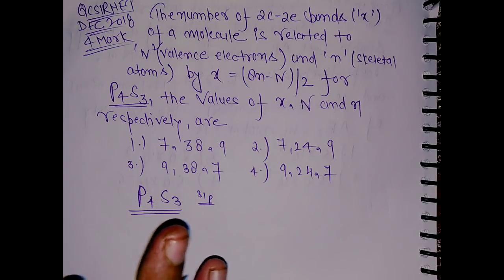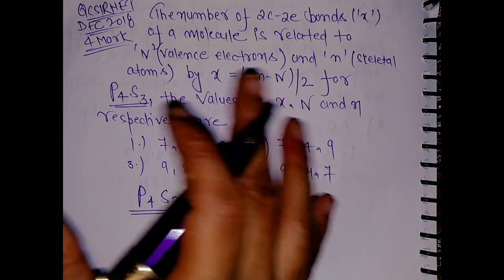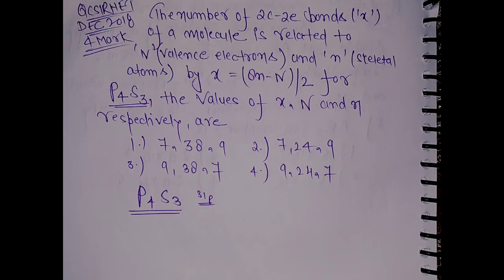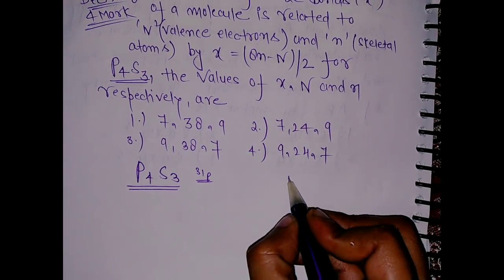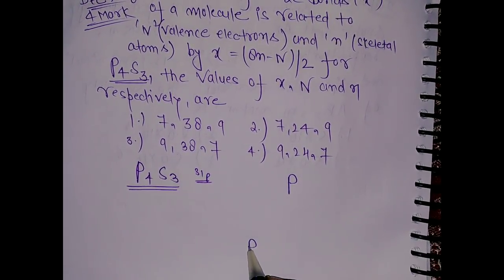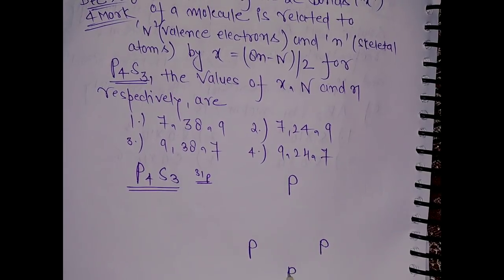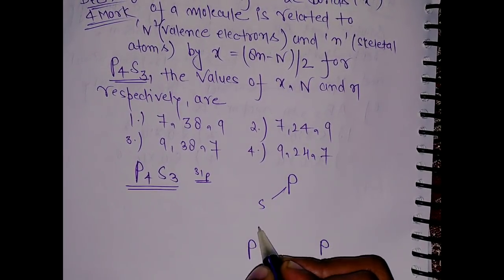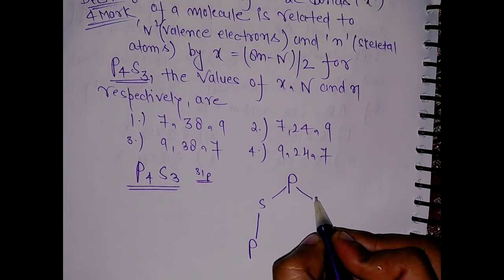If you know the structure of P4S3, you can easily determine this. The structure of P4S3 is one P at the top and we have 3P at the bottom.